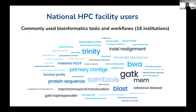We looked at projects awarded an allocation through the National Compute Merit Allocation Scheme between 2018 and 2021, or through local merit allocation schemes, capturing users from 16 institutions across Australia. We directly engaged with many of these researchers to hear their experiences. From this, we could see specific tools and workflows commonly being applied — including many whole genome sequencing projects applying tools in the GATK best practices pipeline, such as BWA and GATK, and many annotation and assembly projects using tools like Trinity and BLAST.